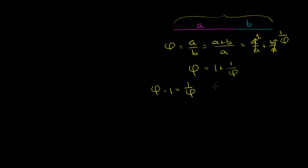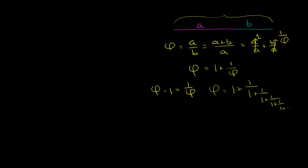We can think of it this way: phi is equal to 1 plus 1 over phi, but instead of writing phi, we substitute again — phi is just 1 plus 1 over 1 plus 1 over phi. And we could just keep on going forever. This is a recursive definition of a variable, where it's defined in terms of itself. But even this seems like a pretty neat property.